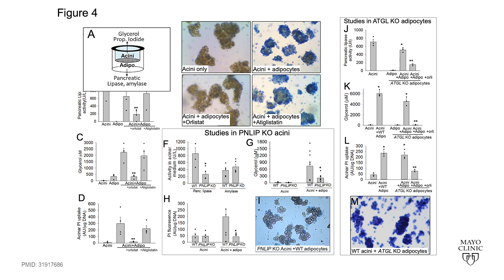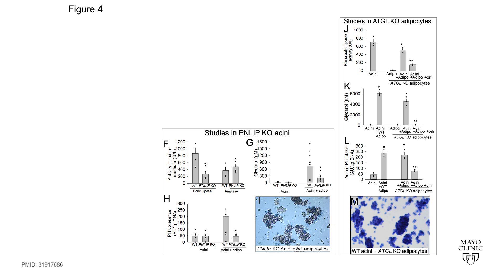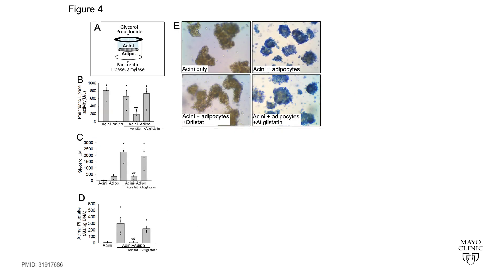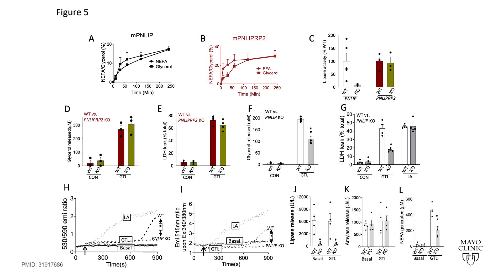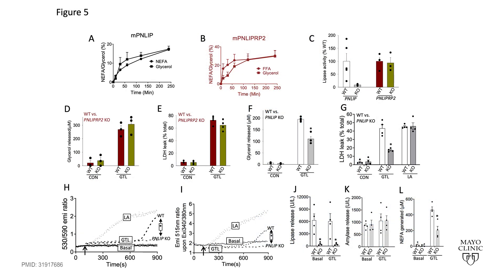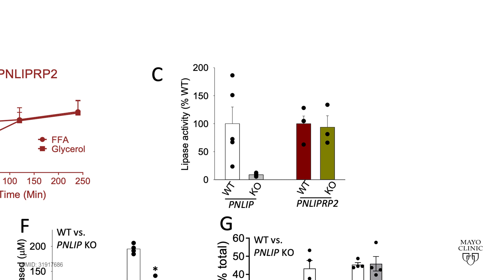In Figure 4, using a co-culture system, genetic and pharmacologic approaches to inhibit the lipases, we deduce that pancreatic lipase causes cytotoxic injury and not ATGL. In Figure 5, we identify PNLIP as the main pancreatic lipase and exclude PNLIPRP2 in mediating these phenomena.